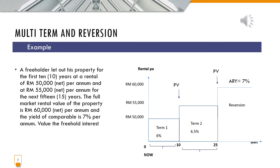Now let's have a look at the diagram. The first term would be 10 years, and the second term would be plus another 15 years, so that would be 25 years total. After 25 years of lease, the property will be reverted back to the owner. The reversion will only start after 25 years.